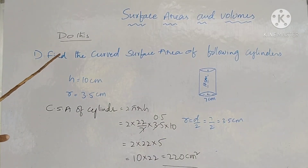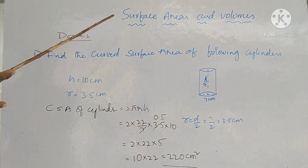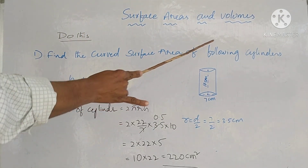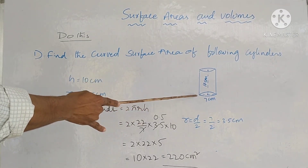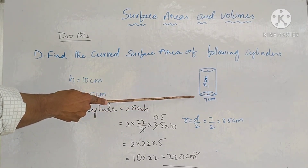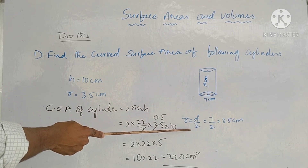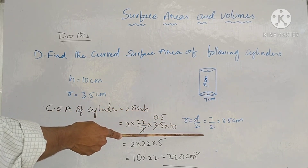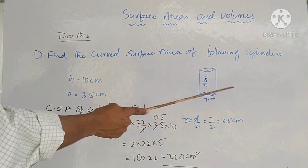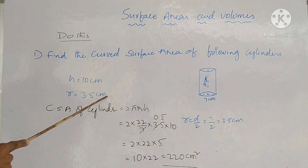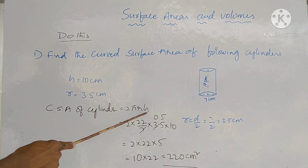First question on curved surface area of cylinders: Find the curved surface area of the given cylinder. The height is 10 centimeters and the diameter is 7 centimeters. Radius = diameter ÷ 2 = 7 ÷ 2 = 3.5 centimeters. So h = 10 cm and r = 3.5 cm. Substitute into the formula: CSA = 2πrh.